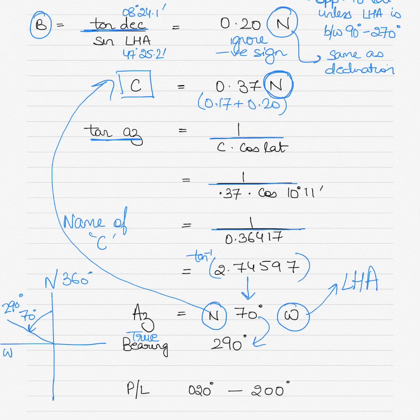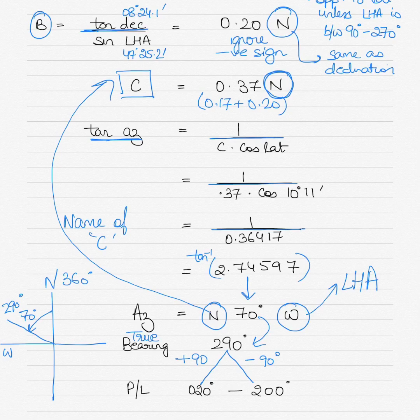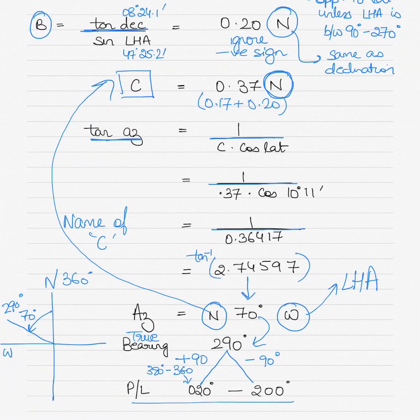The azimuth is named North 70 degrees West: North comes from the name of C, and West from the LHA being named West (between 0 and 180). North 70 West means 360 minus 70 equals 290 degrees true bearing. To find the position line, add and subtract 90 degrees: 290 minus 90 equals 200, and 290 plus 90 equals 380; since 380 exceeds 360, subtract 360 to get 020. The position line orientation is 020 to 200 degrees.